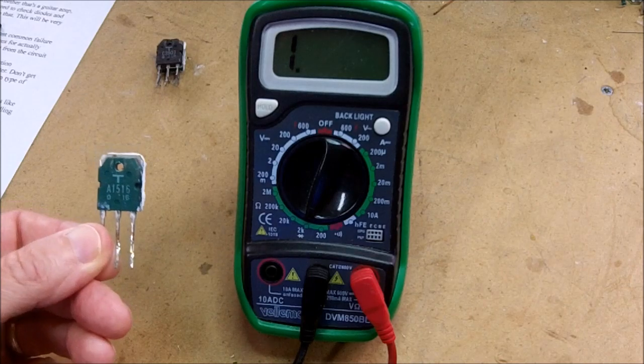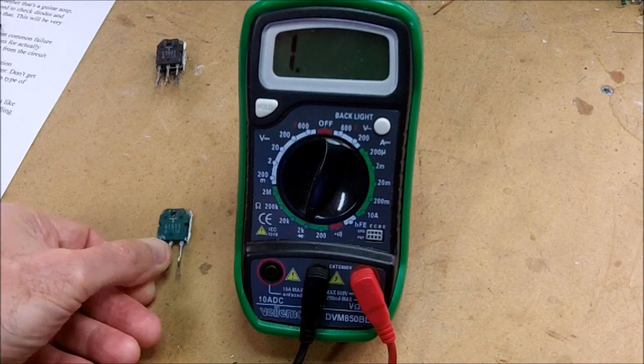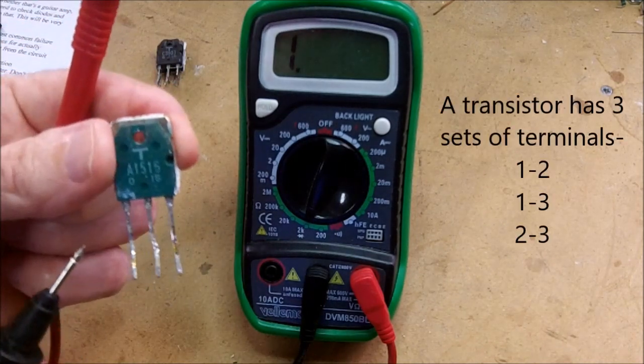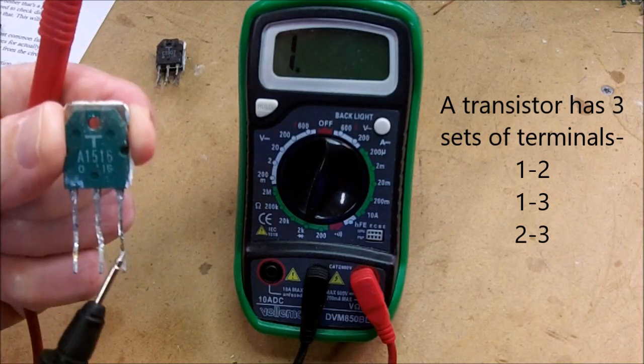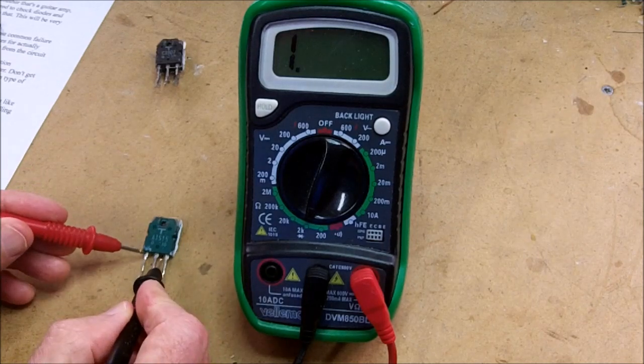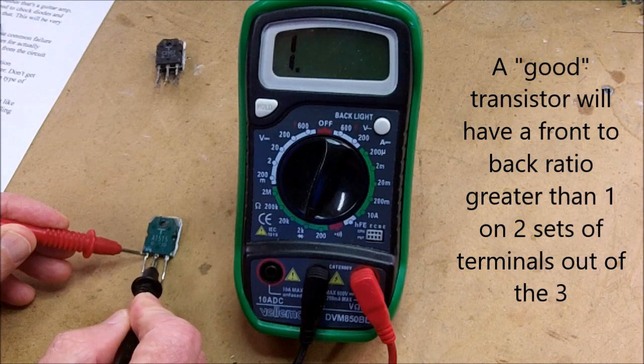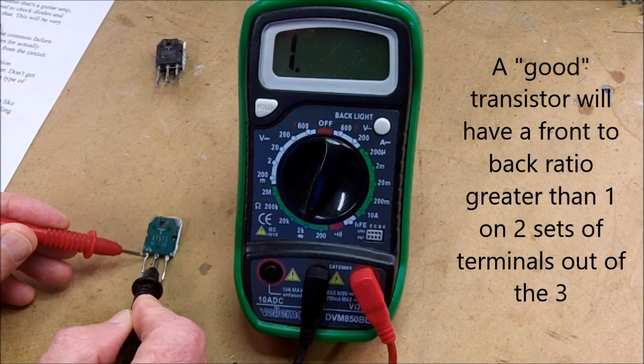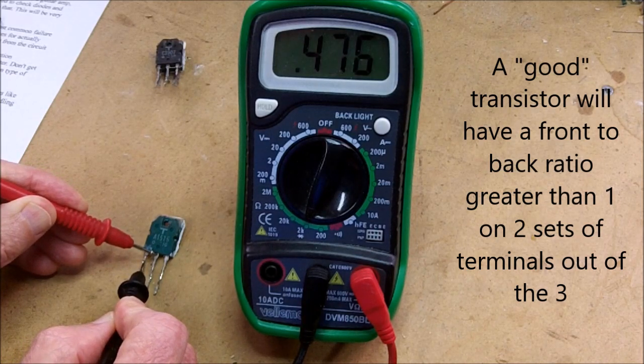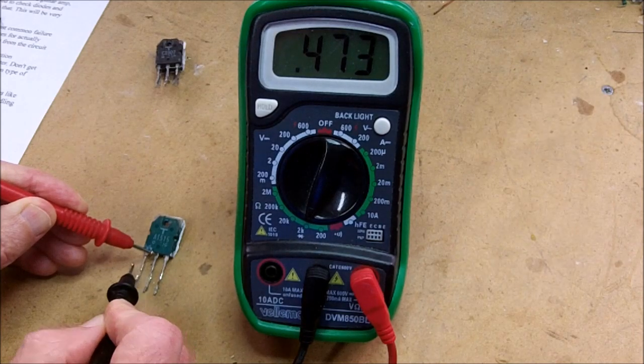So I'm going to test this transistor, which happens to be a 2SA1516 transistor. And let's just call these terminals 1, the left one, 2 for the middle one, and 3 for the right one. So first of all, I'll check between terminals 1 and 2. If you can see the meter, we get a 1, so it's a high resistance. If we check between 1 and 2 by reversing the leads, we get a 0.473, a low resistance. So that junction looks good.